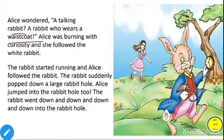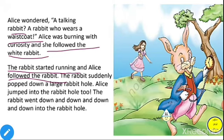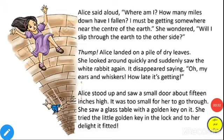Alice was burning with curiosity and she followed the white rabbit. The rabbit started running and Alice followed. The rabbit suddenly popped down a large rabbit hole and Alice jumped into the rabbit hole too. The rabbit went down and down into the rabbit hole. Alice said aloud, 'Where am I? How many miles down have I fallen? I must be getting somewhere near the center of the earth.' She wondered, 'Will I slip through the earth to the other side?'